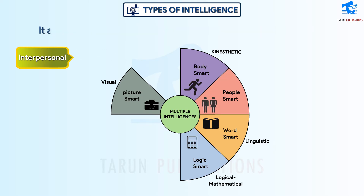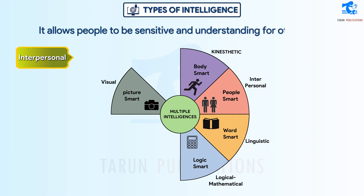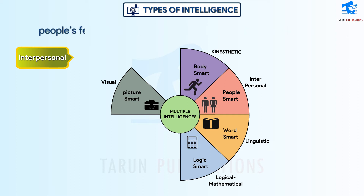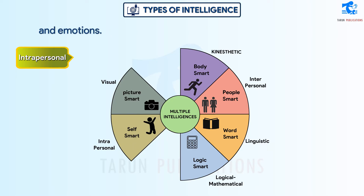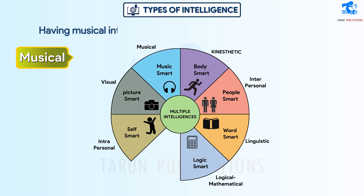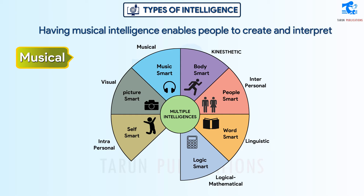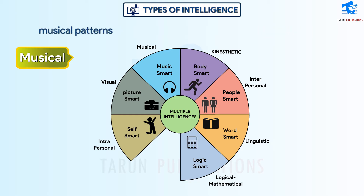Interpersonal intelligence allows people to be sensitive and understanding of other people's feelings and emotions. Intrapersonal intelligence allows people to have an understanding of their own feelings and emotions. Musical intelligence enables people to create and interpret musical patterns.